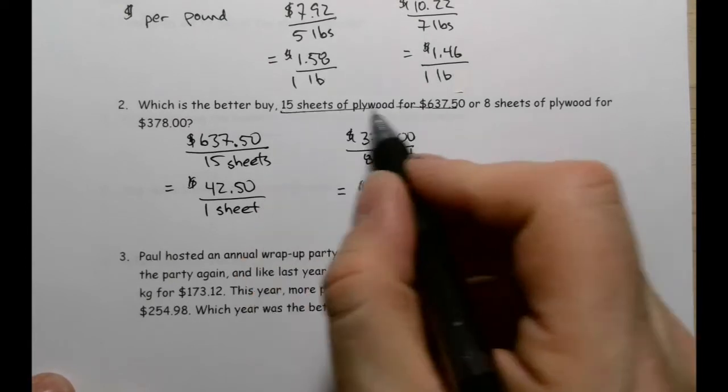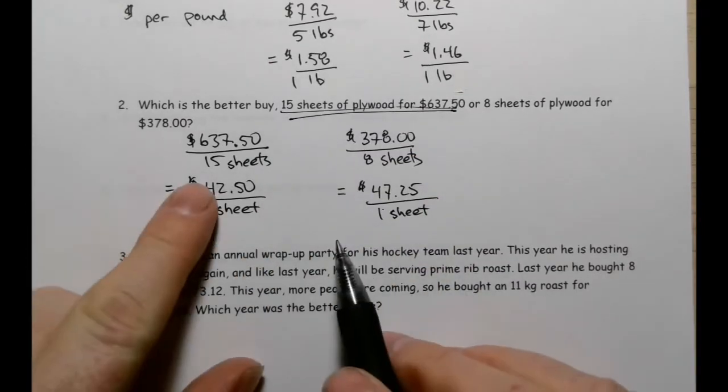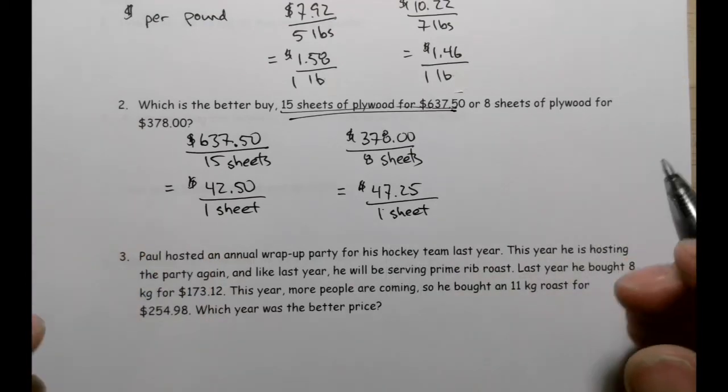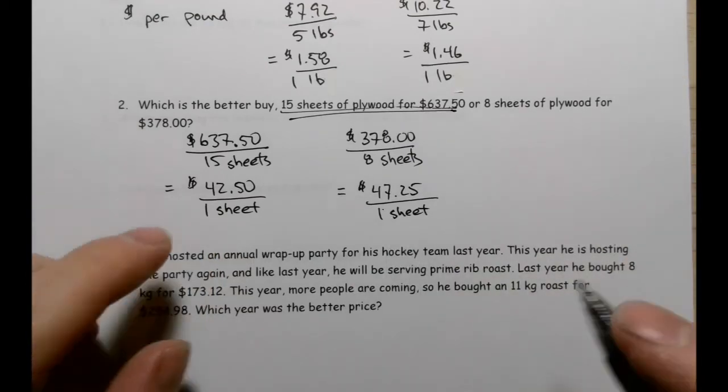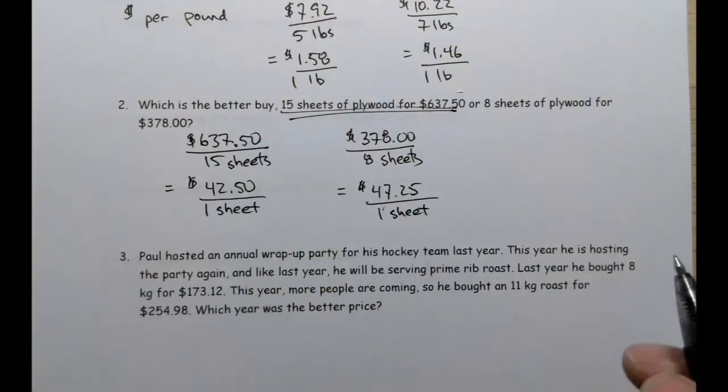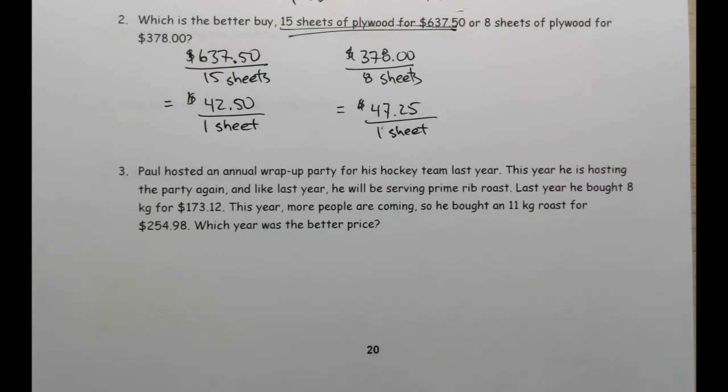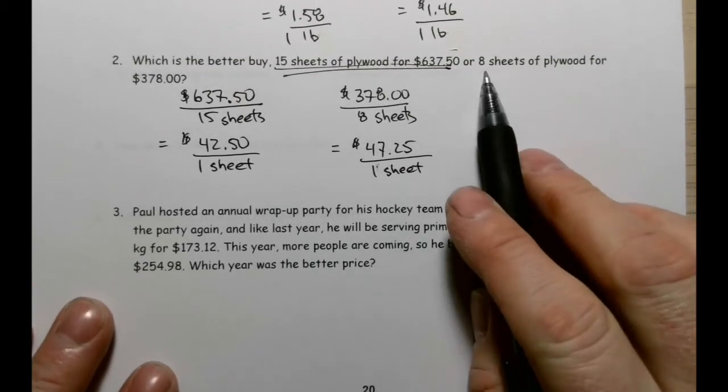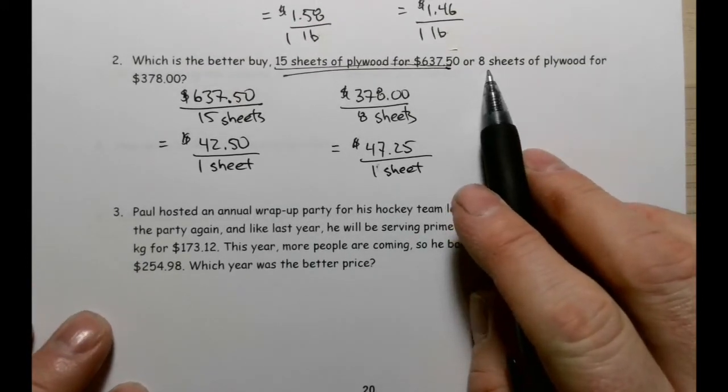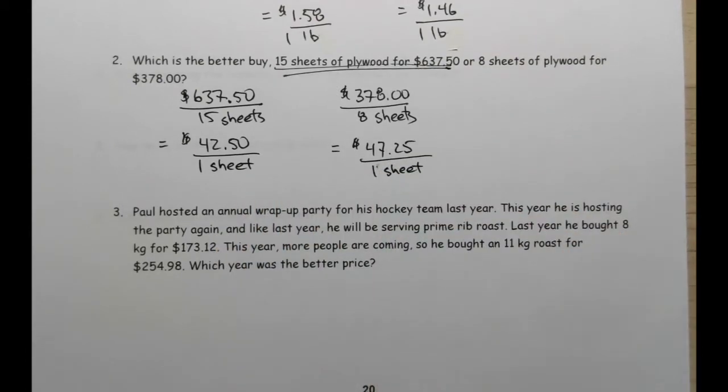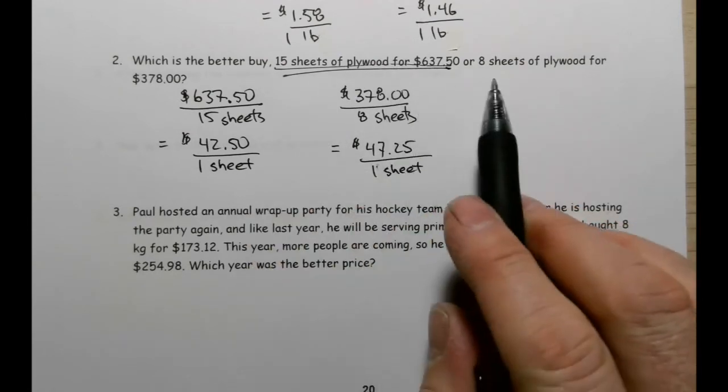And what you're noticing in general is that the more you buy of something, usually the smaller the unit price. But the trade-off is you've got to buy more of it. Eight sheets of plywood - you're not going to buy 15, right? You just wouldn't. That would be a waste of money. But if there were two different places here and you were going to buy, for example, let's say you needed 14 sheets of plywood, maybe you'd compare those two and you'd see which one was cheaper per sheet, and then you'd go to that particular store.